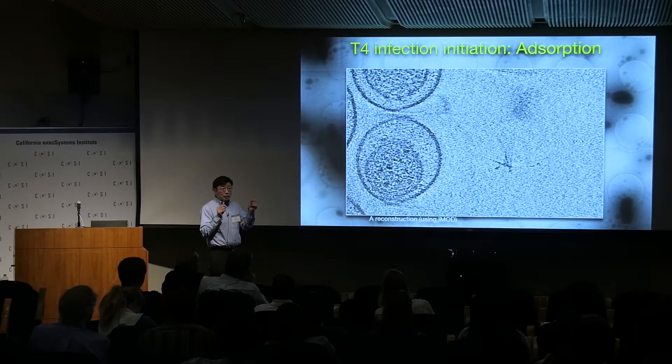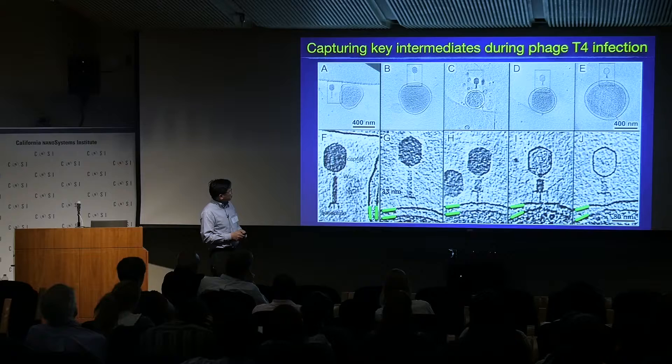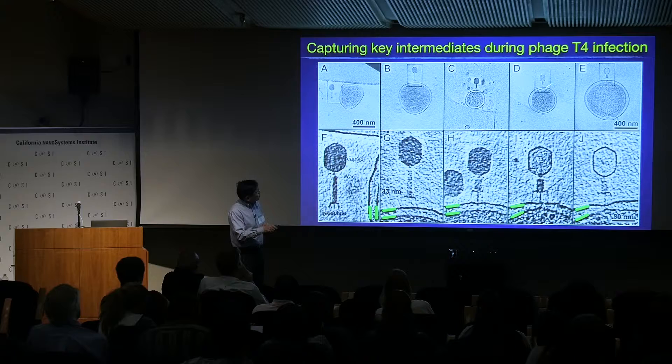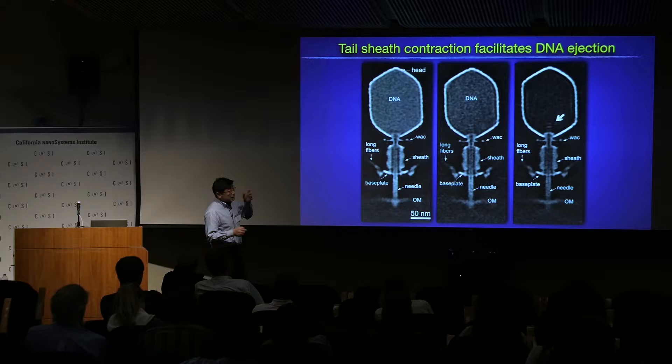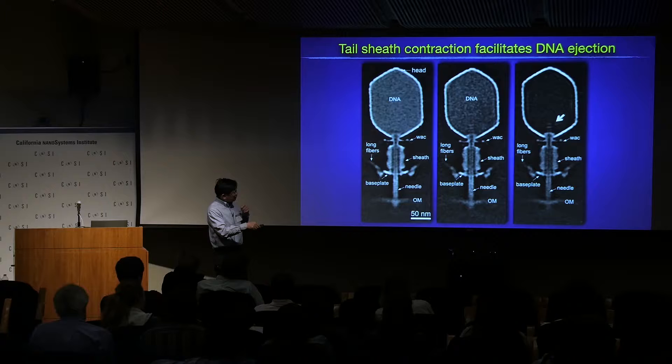Many of the tail fibers still fold back along the tail sheath. This is what we think is the earlier interaction — probably the first preserved interaction between this phage stage and the host. Looking at all the snapshots from early stage onward, you can see the interaction go perpendicular, then contraction starts, and ultimately you can see DNA start to release. We capture key intermediates during T4 infection.